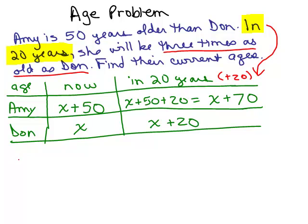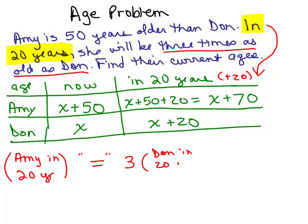So Amy's age in 20 years, whatever her age is, is going to equal three times as old as Don. I'm going to put equals in quotes because it's not really equal until I say what that is. We have to take Amy's age in 20 years and say that's equal to three times Don's age in 20 years.